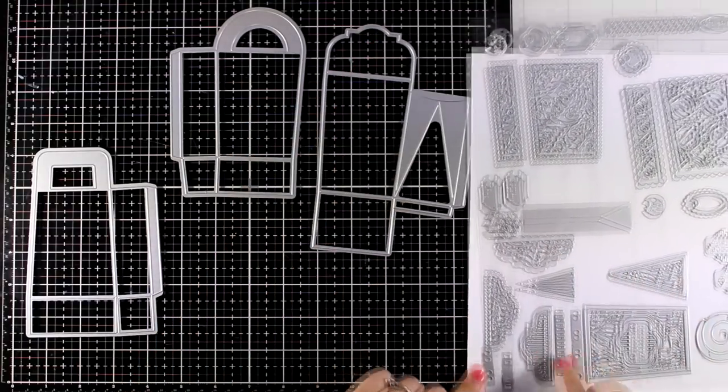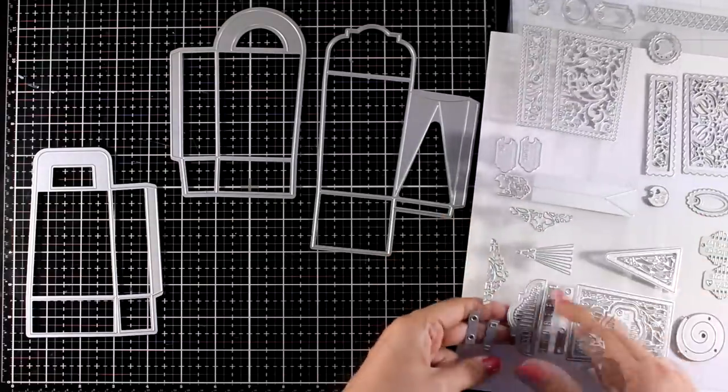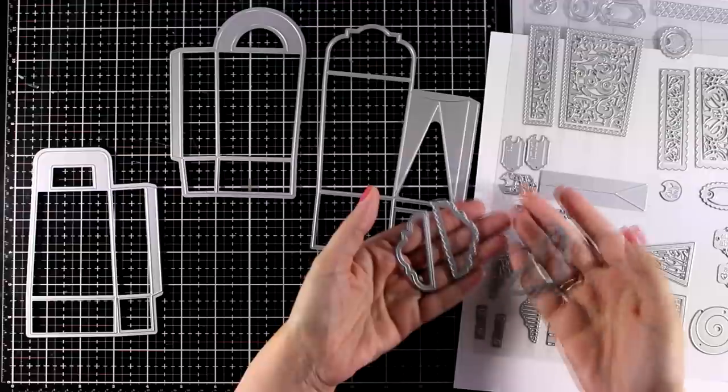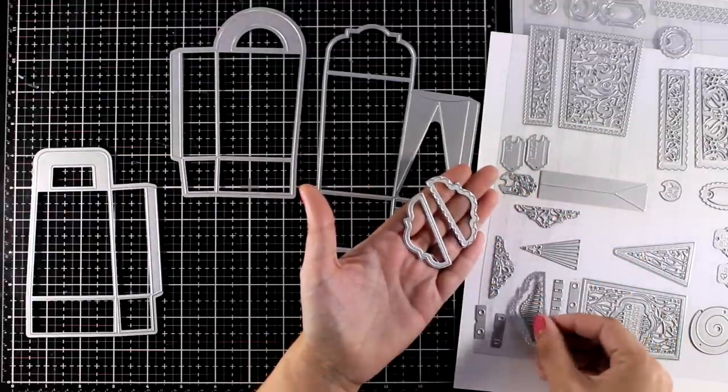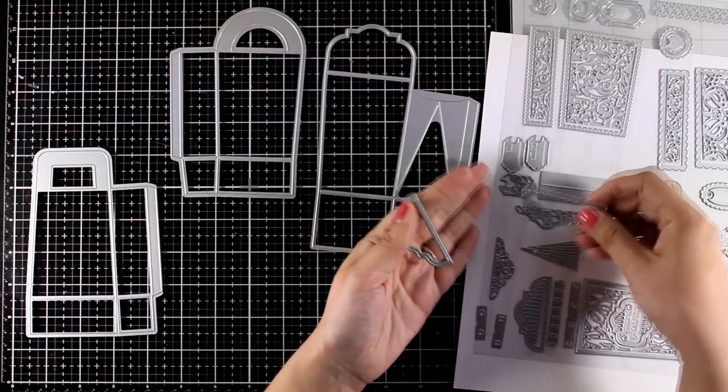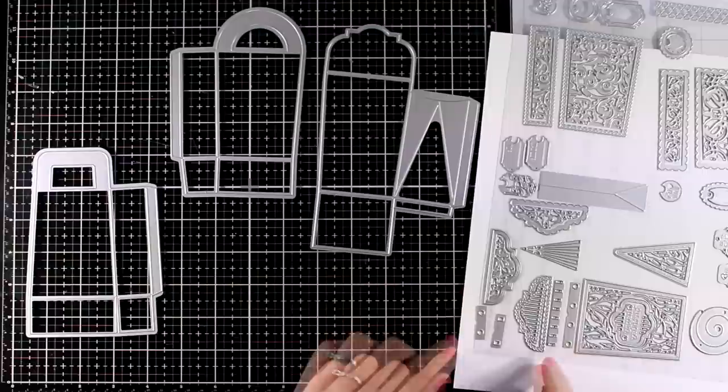Now these two dies are for decorating the flap. But again, notice that you get the outside as well as the inside. So you get three different shapes with bigger and smaller scallops or stitched designs. You get the beautiful lace that fits inside. So many different options here.